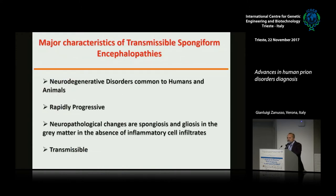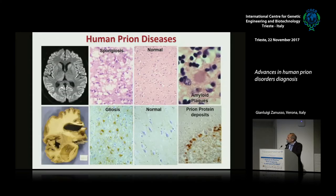Prion disorders are neurodegenerative disorders, rapidly progressive, and are characterized neuropathologically by the presence of spongiosis in the white matter, in the absence of inflammatory cells, and they are transmissible. This is an example of the MRI of a patient with Creutzfeldt-Jakob's disease. You see the hyperintensive signal in the cortical ribbon, which reflects the spongiosis that we see in the pathology.